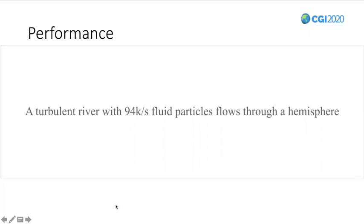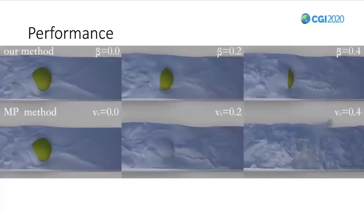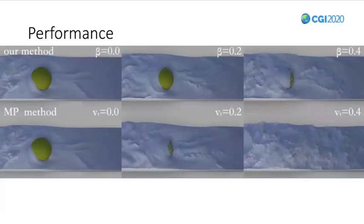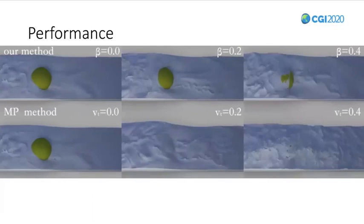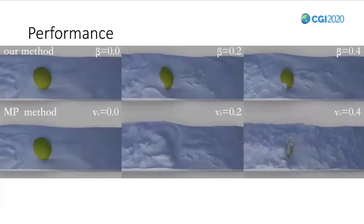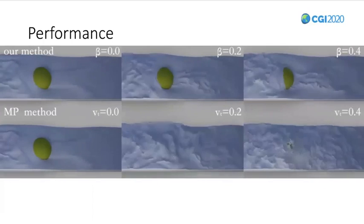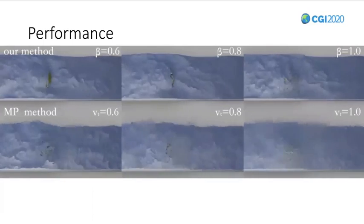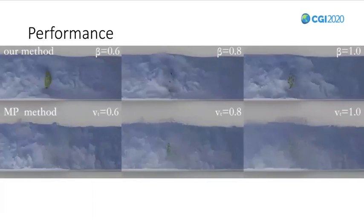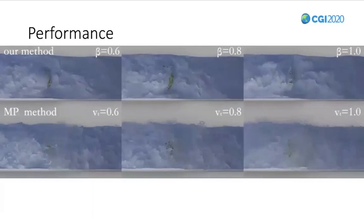This is the simulation result using our method and comparison with other methods. In this experiment, the first row is our method and the second row is the simulation result using MP method. It could be seen that using our method, we can achieve a more turbulent result.